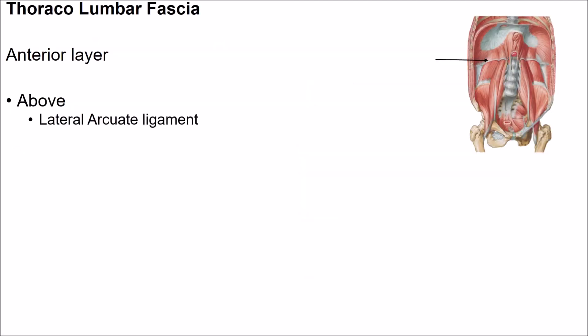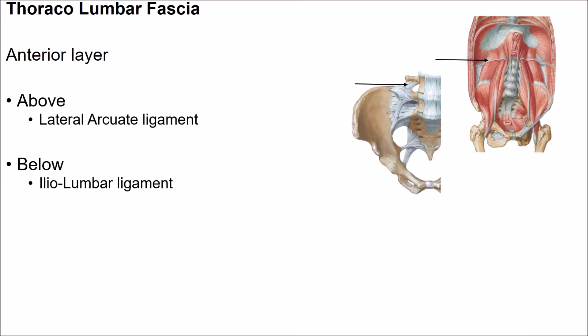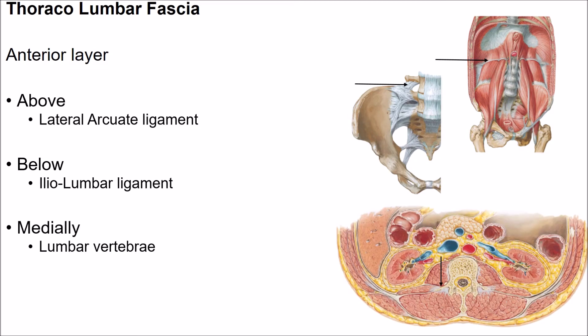The anterior layer, when traced above, thickens to form the lateral arcuate ligament, which gives origin to the diaphragm. The subcostal vessels and nerves enter behind the lateral arcuate ligament. Below, this layer thickens to form the iliolumbar ligament, which is attached to the posterior part of the iliac crest. Medially, the anterior layer is attached to the anterior surface of the transverse process of the lumbar vertebrae, where it blends with the psoas fascia covering the psoas major muscle.